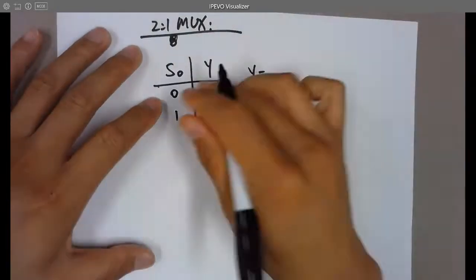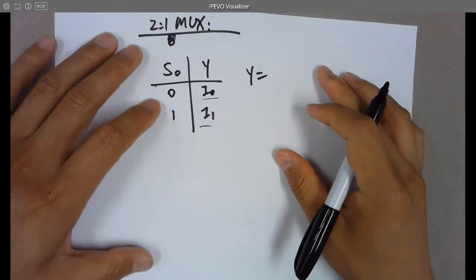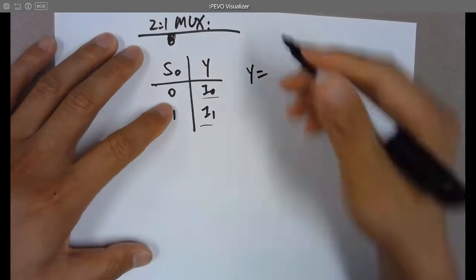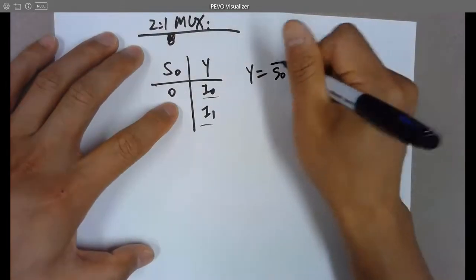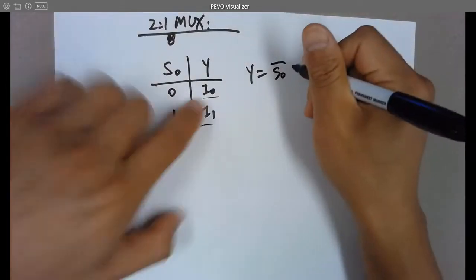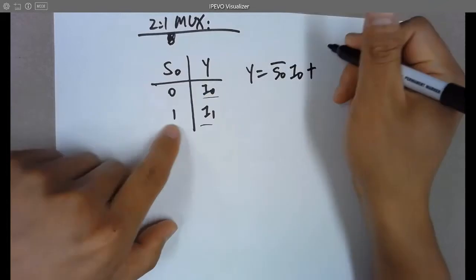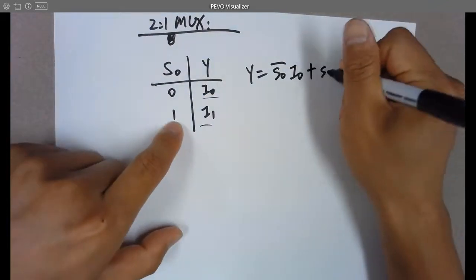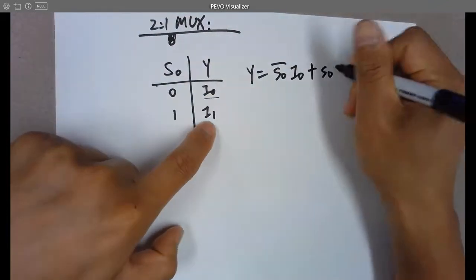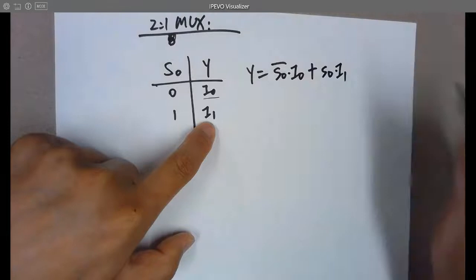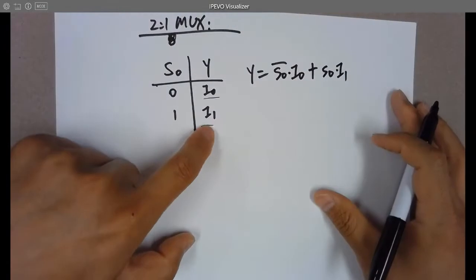When S0 is 0, you are delivering I0 to the output Y — whatever I0 is, it can be 0 or 1. When S0 is 1, you are delivering I1 to Y. This truth table uses a case-style form — a slightly different format than before — to make the logic function easier to read.